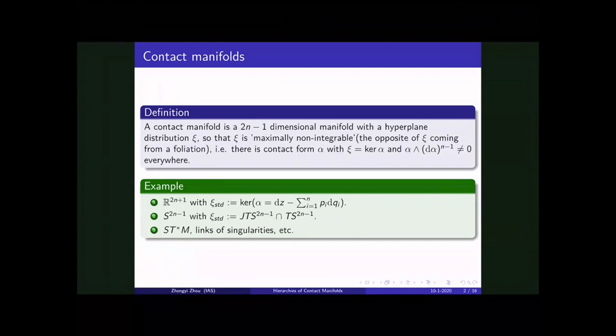So basic examples of a contact manifold are R^(2n+1) with this standard contact structure. The other example is a sphere and you view this sphere as a unit sphere in C^n and you consider the complex tangency, which is you take the tangent space of the sphere and intersect with the tangent space after you rotate by the complex structure. This is also a contact structure and more generally, you can consider the unique unit sphere bundle in the cotangent bundle and also the links of isolated singularities. All of these are contact manifolds.